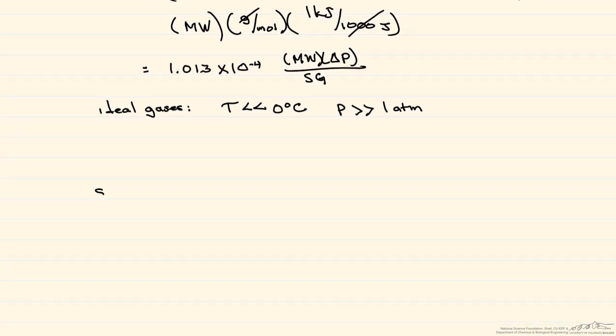we'll start with solids and liquids. Here, delta U is approximately equal to zero, and delta H is approximately equal to the specific volume times delta P.